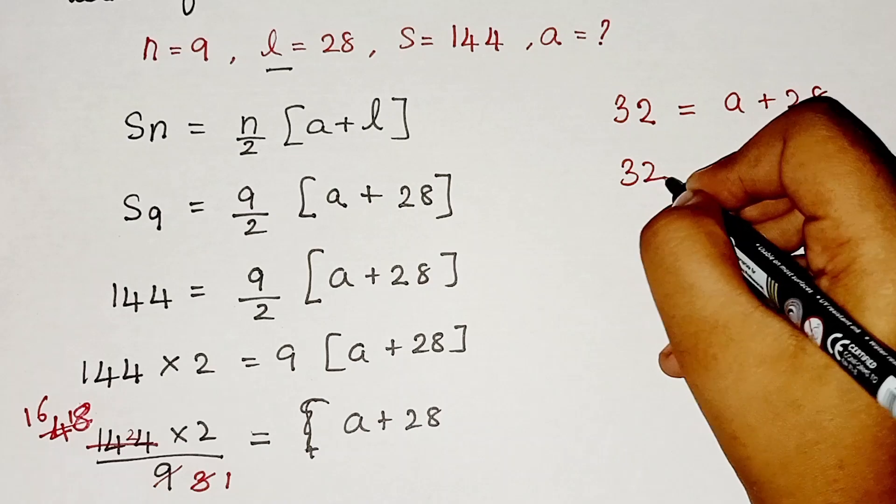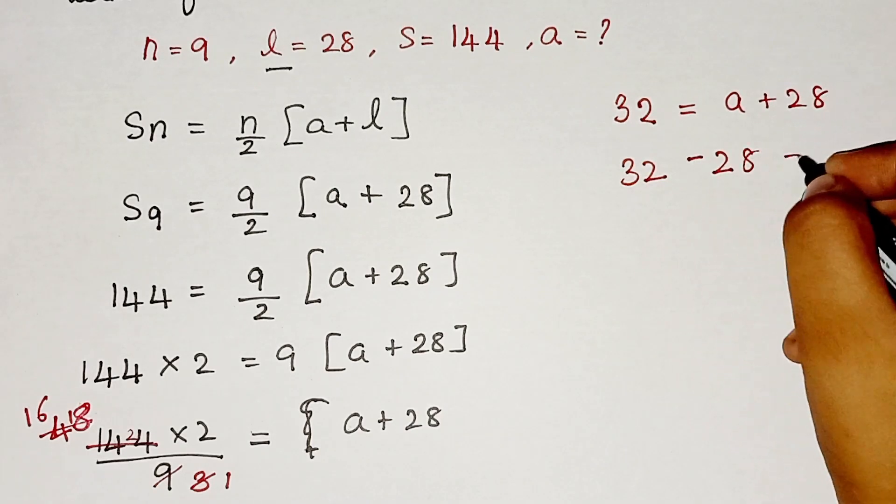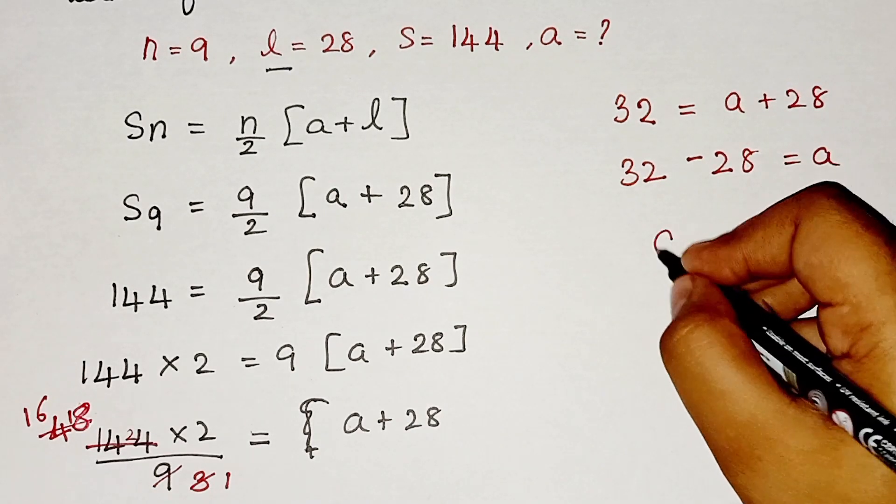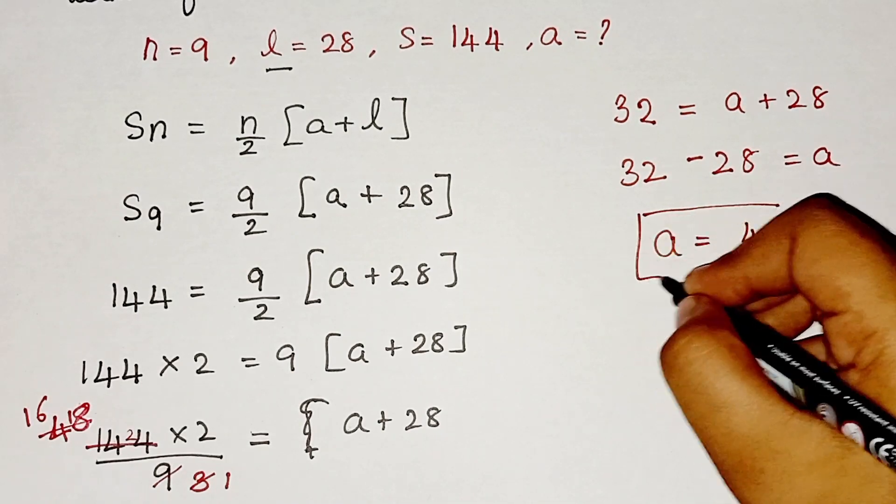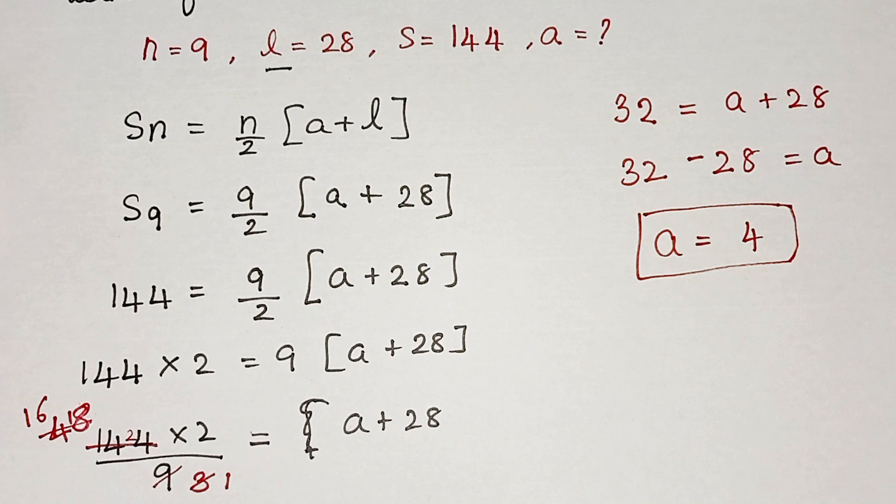32, when we get this 28 to this side, it changes into minus. 32 - 28 = a. So when we subtract it, we will get 4. So this is the a value. Finally we found the a value, that means we solved it.